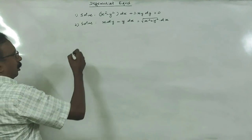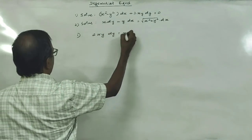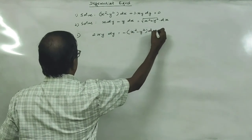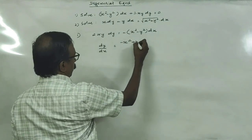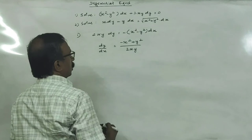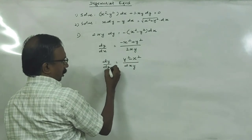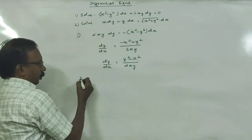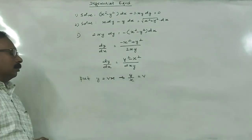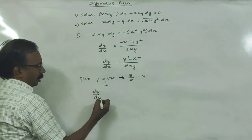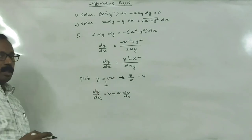Let us solve the first homogeneous question. Here, 2xy dy = −(x² − y²) dx. So dy/dx = (y² − x²)/(2xy). Now, put y = vx, so y/x = v, and differentiating: dy/dx = v + x dv/dx.